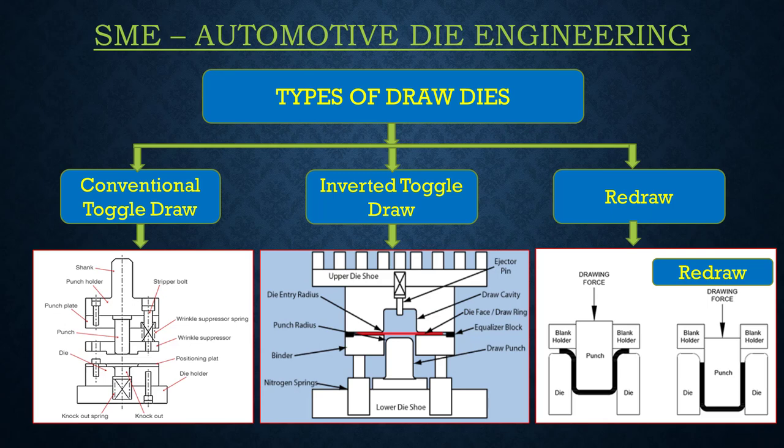This design is nowadays used in small components and progressive dies where we produce Class B and Class C parts. In inverted toggle draw, which is mostly used nowadays in single action presses, the cavity is at the top die and the punch and blank holder are at the bottom die. For ejection, the top die has an ejector pin mechanism. The third type is redraw — when the draw ratio cannot be completed within a single draw, we go for redraw.